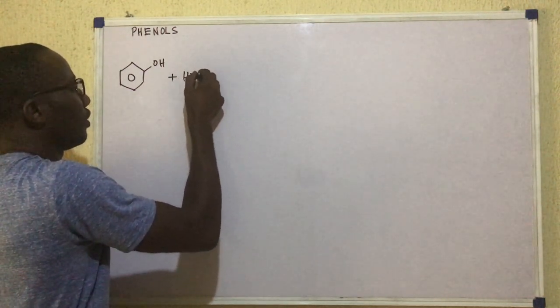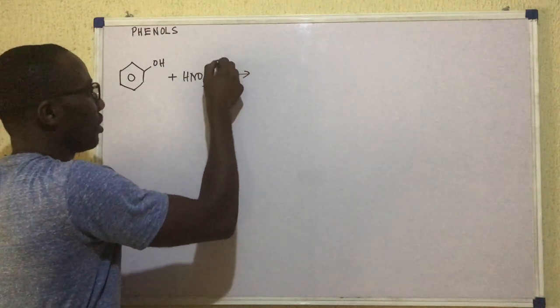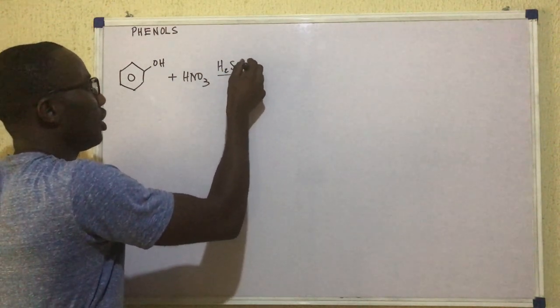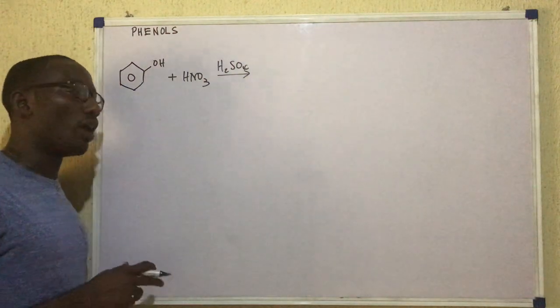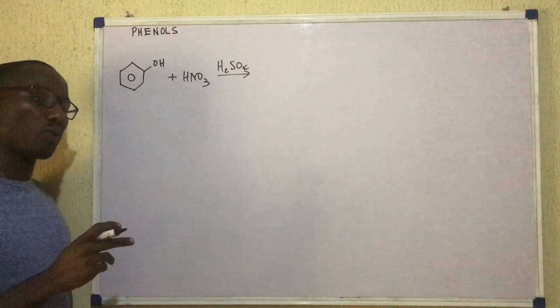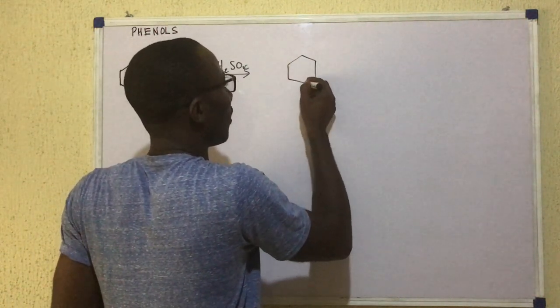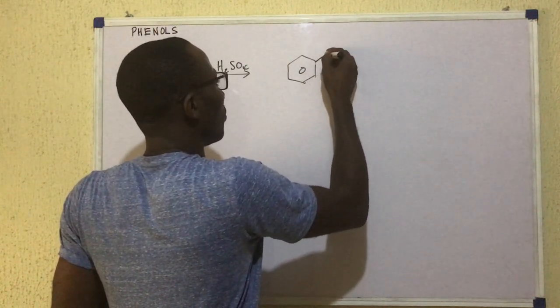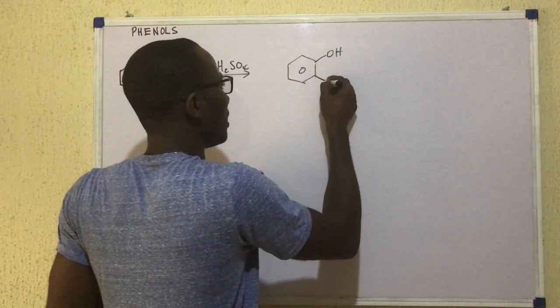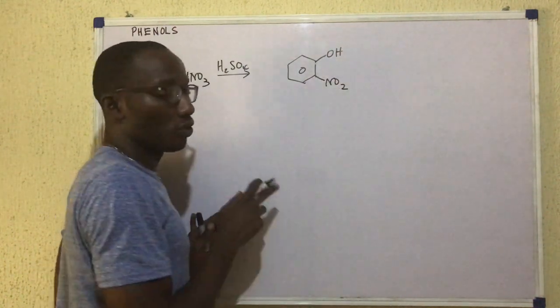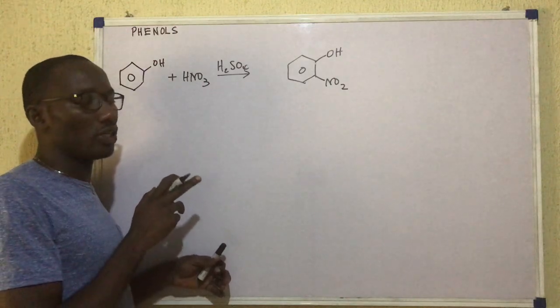Nitration involves phenol reacting with HNO3 in the presence of H2SO4. Now when this reaction takes place, we get two products. One of them is, this is an OH and then that's NO2. So this is called ortho-nitrophenol.